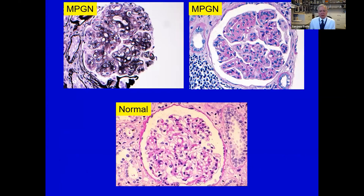This is what MPGN looks like on light microscopy. Here's a normal glomerulus for comparison, and here is what MPGN looks like: you have mesangial expansion, somewhat nodular, with hypercellularity. Looking at the capillary walls, you can see these large double contours. There is cellular material stuck inside — people like to call it mesangial interposition. The whole picture has a very lobular accentuation to it, well seen on PAS sections. On silver stains, you can see the double contouring much more clearly.